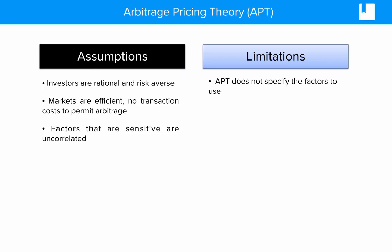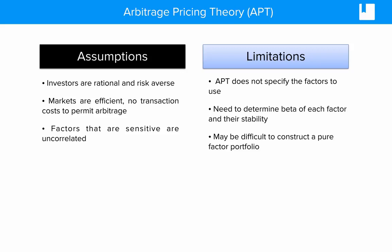The APT model itself does not specify the relevant factors to use, so we have to identify those. As we mentioned in the CAPM, it's not easy to calculate an accurate beta, so we'd need to calculate the beta or sensitivity measure to each different factor in the APT. Lastly, when constructing a portfolio where we can select the sensitivities we'd like to different factors, it may be difficult to construct a pure factor portfolio.